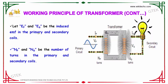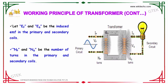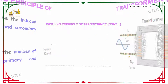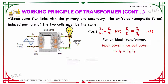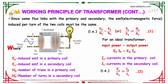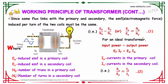Let EP and ES be the induced EMF in the primary and secondary coils. NP and NS is the number of turns in the primary and secondary coil. Since the same flux links with the primary and secondary, the EMF induced per turn of the two coils must be the same. So, we derive the formula: EP divided by NP is equal to ES divided by NS, or ES divided by EP is equal to NS divided by NP.